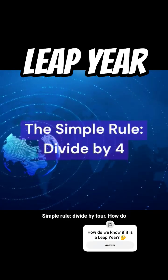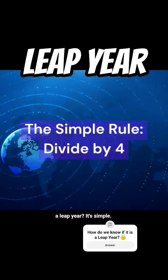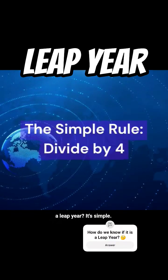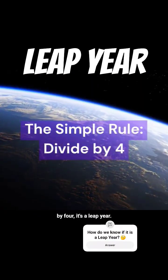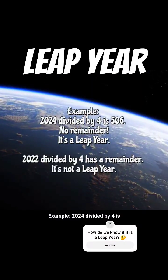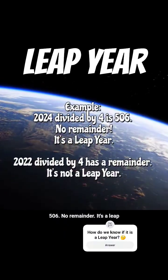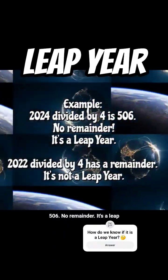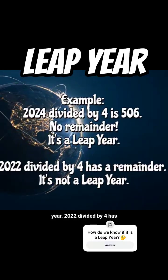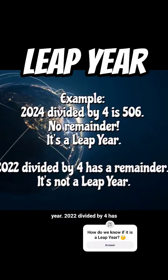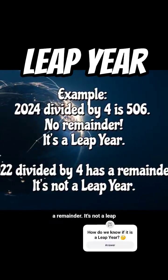Divide by 4. How do you know if a year is a leap year? It's simple: if the year can be divided exactly by 4, it's a leap year. Example: 2024 divided by 4 is 506, no remainder — it's a leap year. 2022 divided by 4 has a remainder, so it's not a leap year.